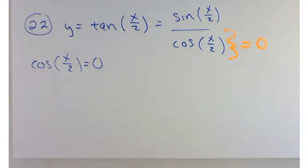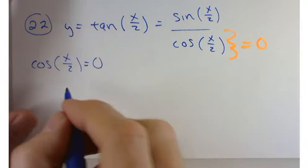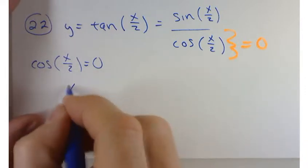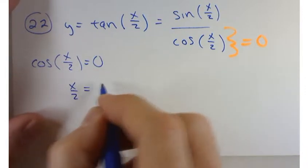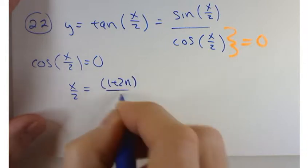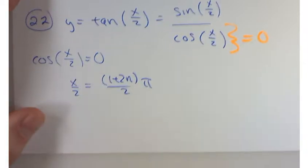Now there's one of two places where this happens. It's either odd multiples of π over 2 or n π. Which case is it for the cosine? Yeah, odd multiples of π over 2. So this equals 0 when x over 2 equals 1 plus 2n over 2 times π.